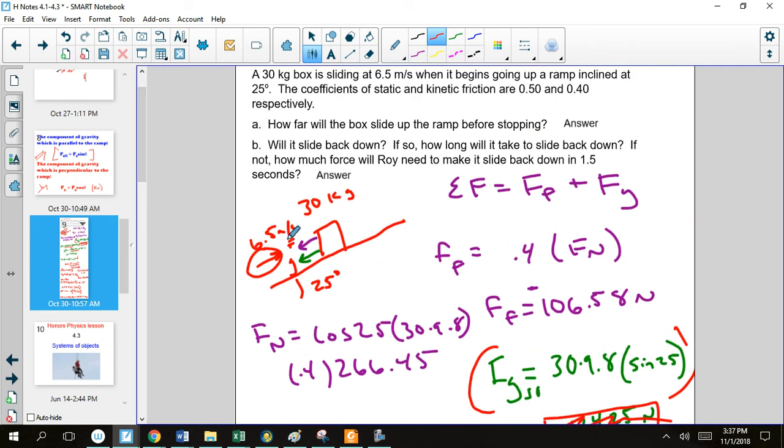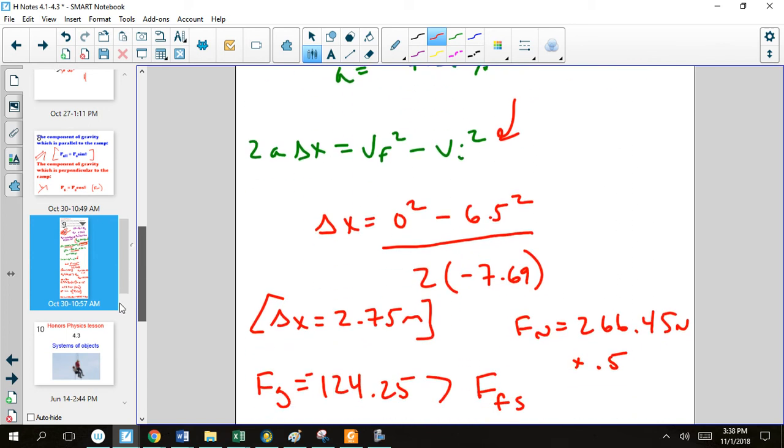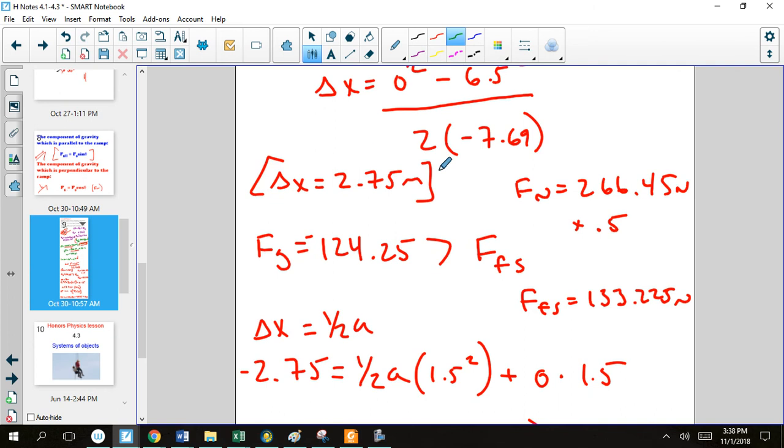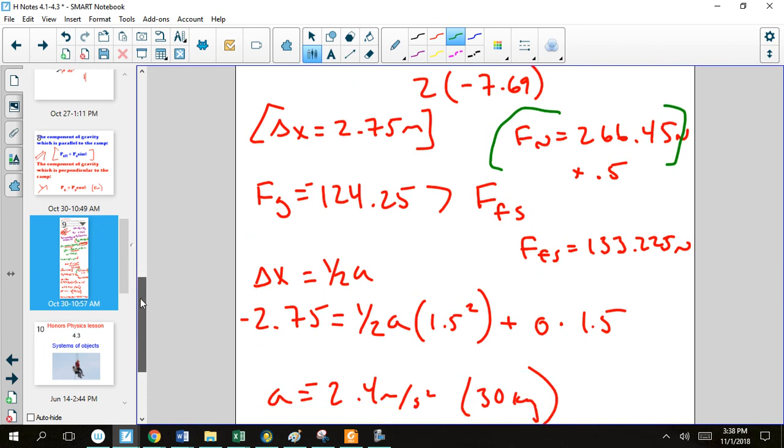So now it wants to know whether or not we're going to slide back down. If so, how long will it take to slide back down? If not, how much force will we need to push it in order to get it to slide down in 1.5 seconds? Alright. So first we're going to take that normal force that we found from before. It's 266.45. And multiply it by our coefficient of static friction. Right? So coefficient of static friction is 133.25. So it's not going to move on its own. Which means we need to give it a little push.